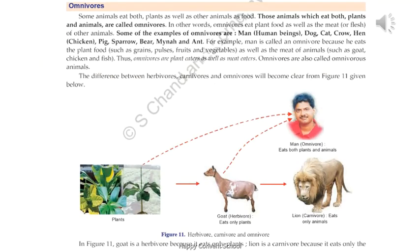Now come to the next group, omnivores. There are some animals which eat both plants as well as other animals as food, for example dog, cat, sparrow, bee, bear, and ant. These animals depend for food on plants as well as other animals. Therefore, these animals are called omnivores — those animals which eat both plants and animals are called omnivores.